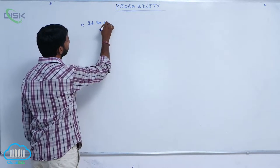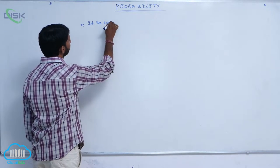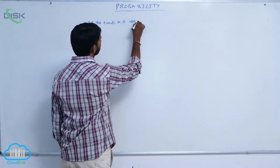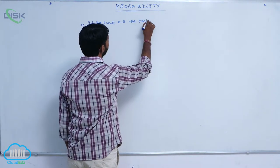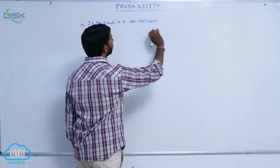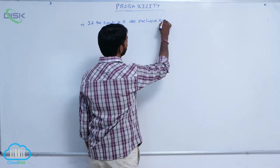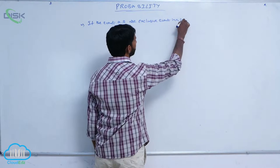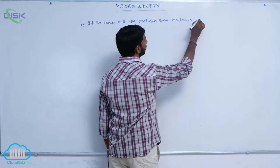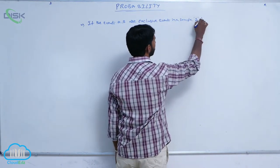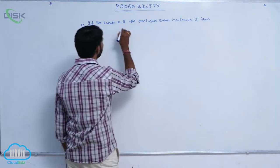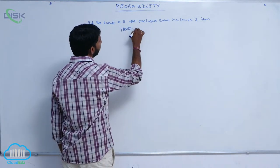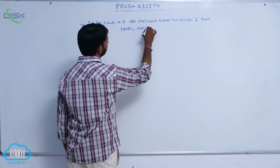If the events A and B are mutually exclusive events in a sample space, then P of A union B is equal to P of A plus P of B.